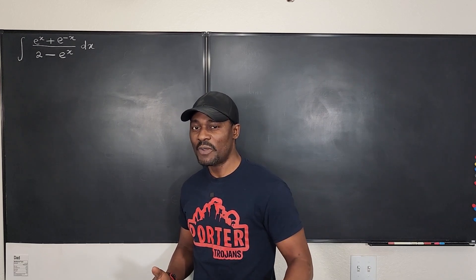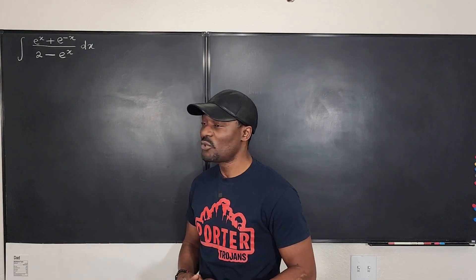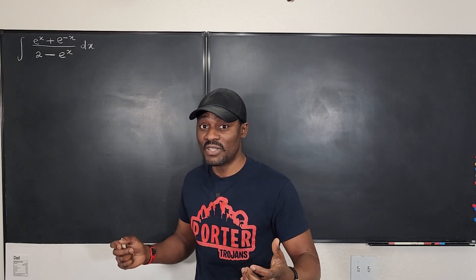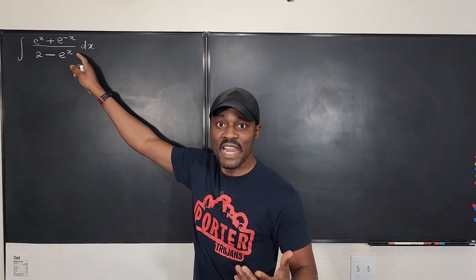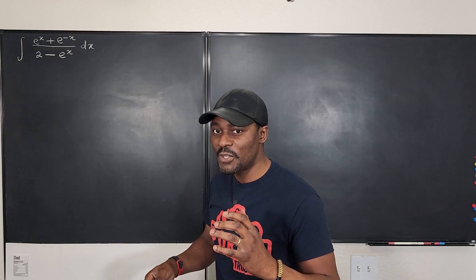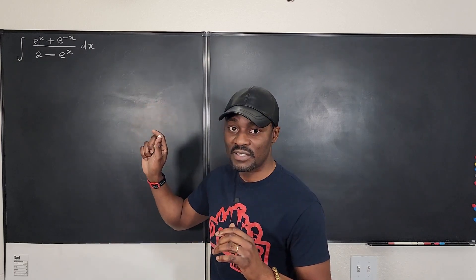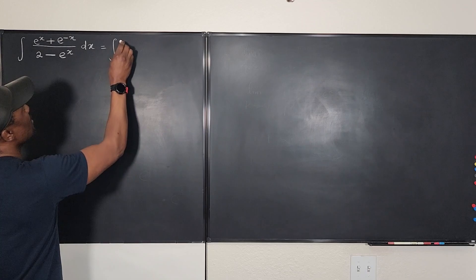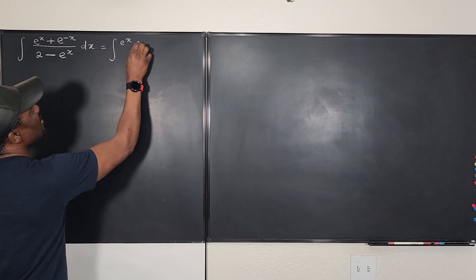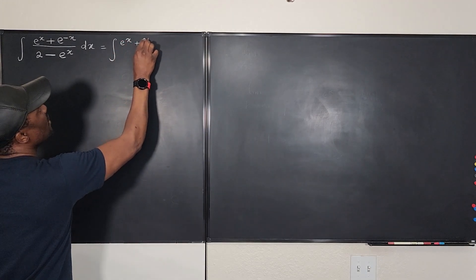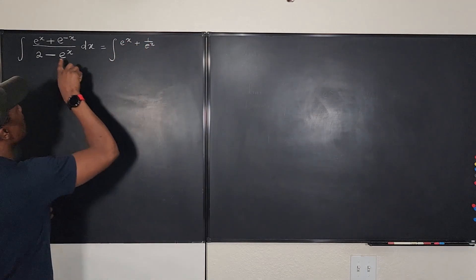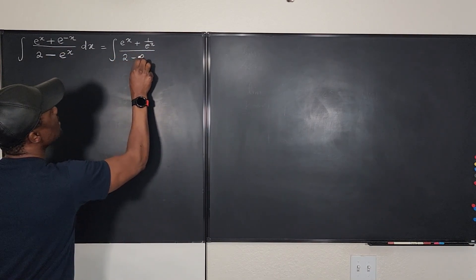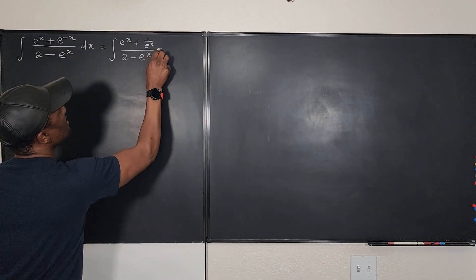While trying to figure out how to integrate this, I realized it would be better to express everything in terms of e to the x instead of e to the negative x. So I'm going to rewrite this expression as the integral of (e to the x plus 1 over e to the x) divided by (2 minus e to the x) dx.